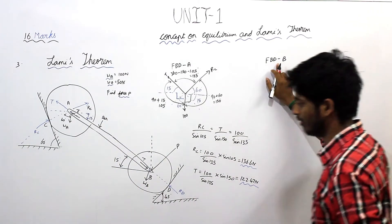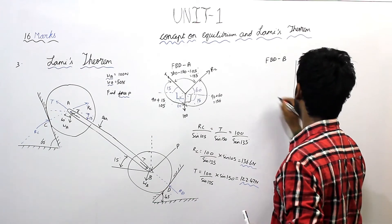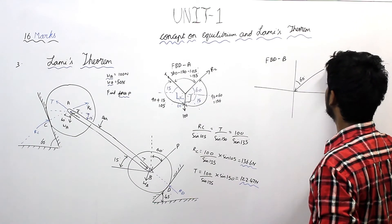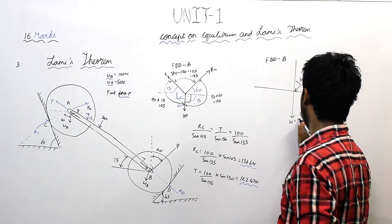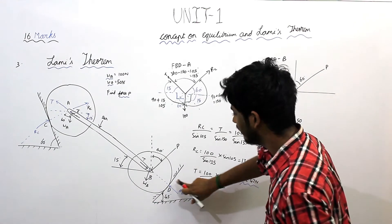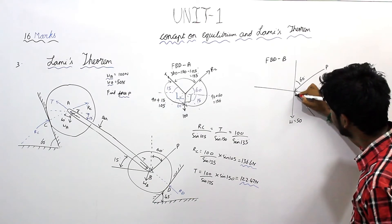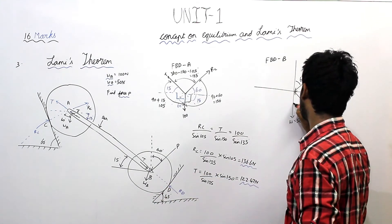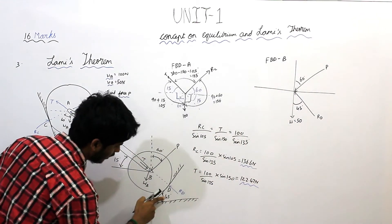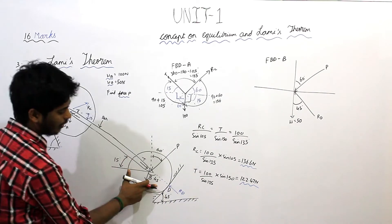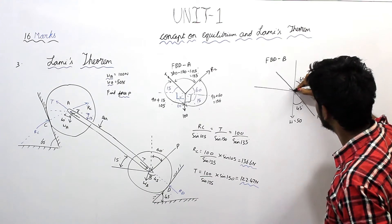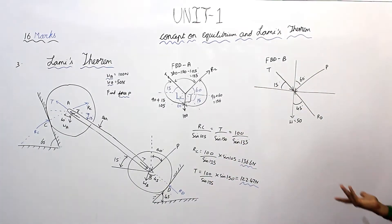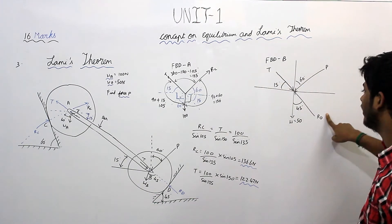We are going to draw the free body diagram for cylinder B. This is P. The angle between the y-axis and P is 60 degrees. Here weight is acting — W equals 50 Newton. Here Rb is also acting, and Rd — Rd makes an angle of 45 degrees with respect to the y-axis. This force T is making an angle of 15 degrees with respect to the x-axis.